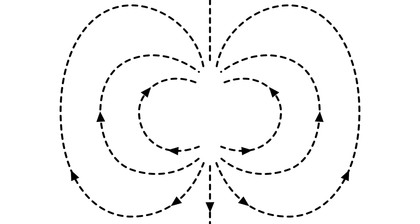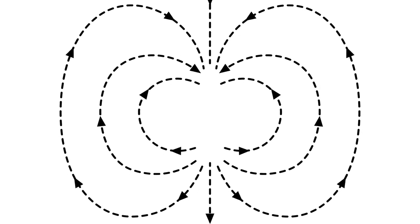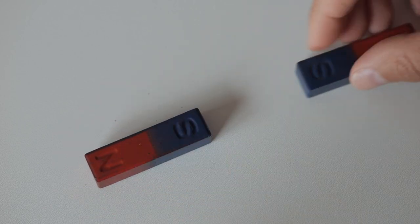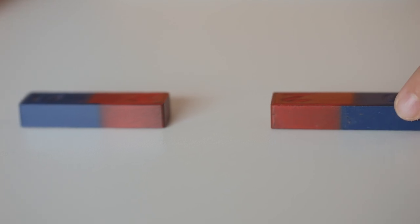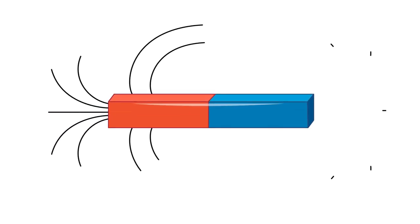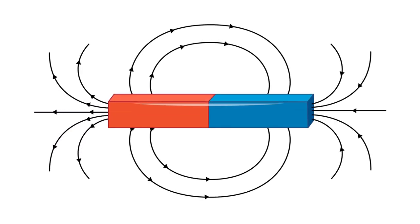Magnetic field lines run from the north pole to the south pole, forming a magnetic field around the magnet. This invisible field is what allows a magnet to attract or repel other magnetic materials. When you bring two magnets close together, opposite poles attract, while like poles repel each other. This push and pull happens because the magnetic field lines want to align in the same direction.